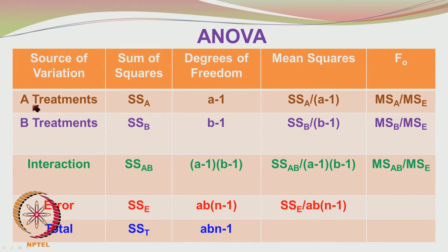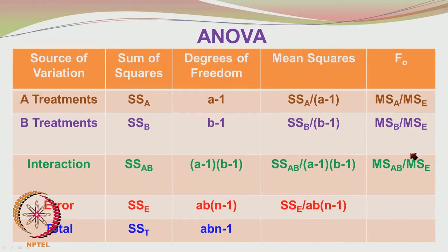The null hypothesis for factor A states that the effect tau A equals zero. Similarly, for factor B, the null hypothesis says tau B equals zero. For the interaction, if the F statistic lies in the rejection region, we reject the null hypothesis and conclude that factor A is important, factor B is important, or the interaction AB is important, depending upon whether the respective F values lie in the rejection region.